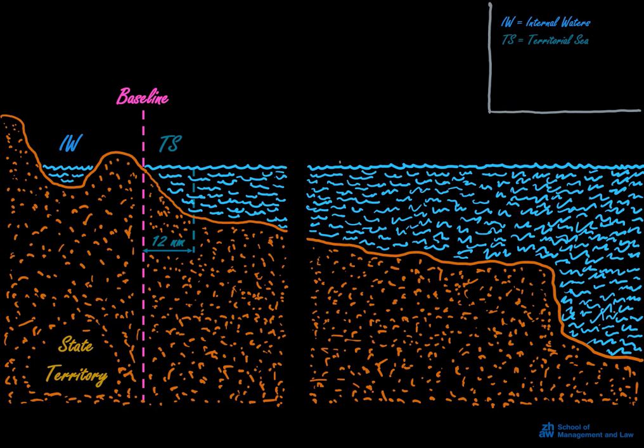Looking seawards from the baseline, we first have the territorial sea, which extends to up to 12 nautical miles from the baseline. In this zone, the coastal state can claim full jurisdiction and control, with the exception that it has to respect the right to innocent passage, meaning that foreign ships are allowed to sail through those waters under the conditions of innocent passage.